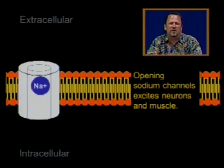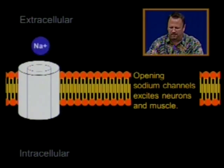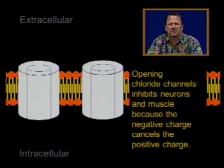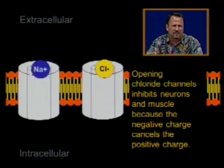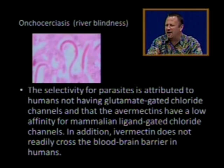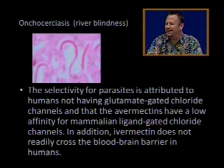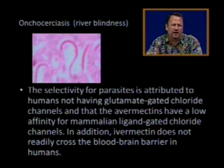Remember, opening sodium channels excites neurons and muscles. Opening chloride channels inhibits neurons and muscles, because the negative charge of chloride cancels the positive charge of sodium. The selectivity of ivermectin for parasites is attributed to humans not having glutamate-gated chloride channels, avermectins having low affinity for mammalian ligand-gated chloride channels, and ivermectin not readily crossing the blood-brain barrier in humans.